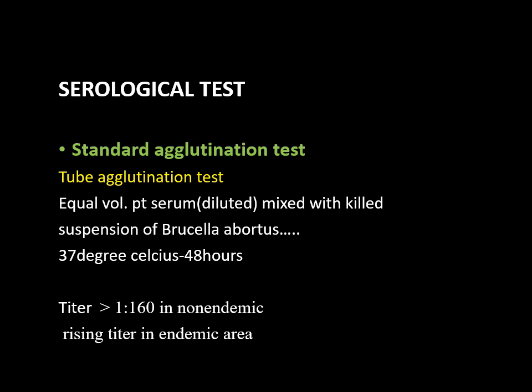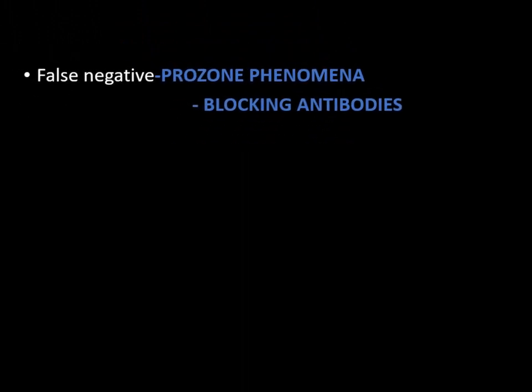The titer is significant when it is more than 1:160 in non-endemic areas. In endemic areas, because there can be very high baseline antibody levels, we look for a rising titer — meaning you take a sample, observe agglutination, then repeat after two to four weeks. If the titer is rising and agglutination is seen at a high level, that goes in favor of brucellosis.